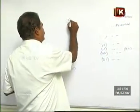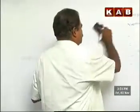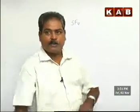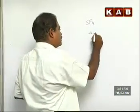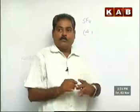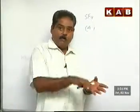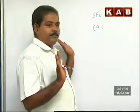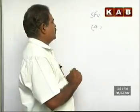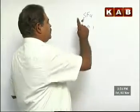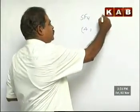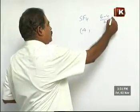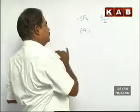For example, SF4 has 4 surrounding atoms. Sulfur has 6 electrons and is using only 4 for bonding. So (6 − 4) / 2 = 1 lone pair. Therefore SF4 is a 4,1 case — four surrounding atoms and one lone pair.